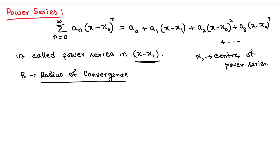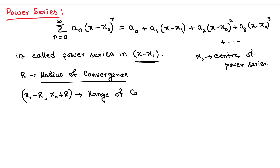Since this is a circular path, there will be a left-hand endpoint and a right-hand endpoint. If the center is x₀, then the left-hand endpoint will be x₀ minus R and the right-hand endpoint will be x₀ plus R. This interval is called the range of convergence.